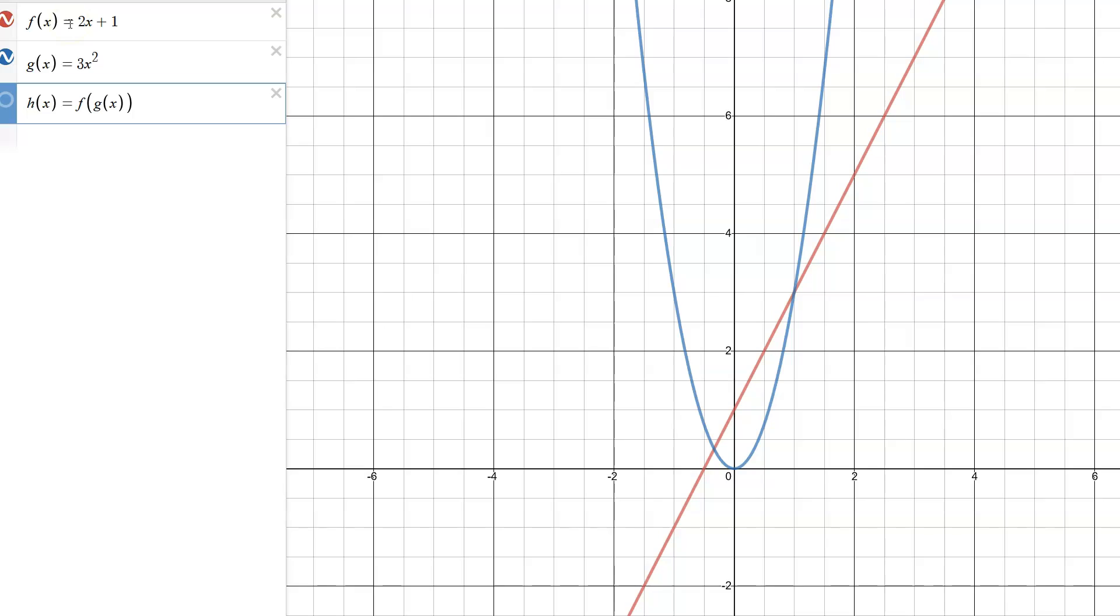We can think about the algebraic way this would look. f of g of x is two times, well what's g of x? 3x squared plus one. This is h where we took g and put it inside of f in that input space.